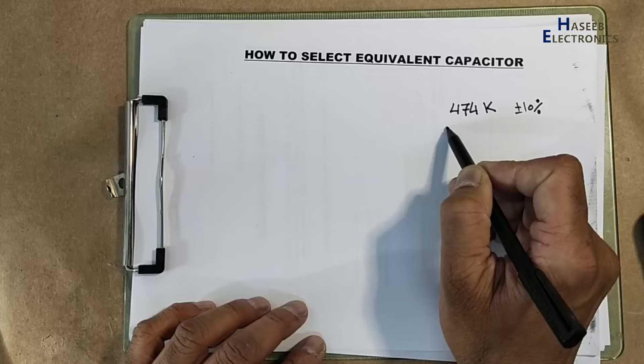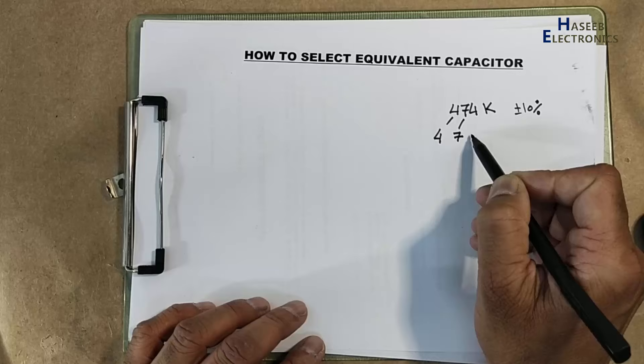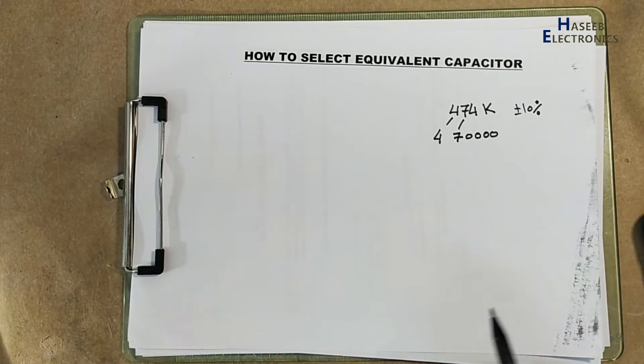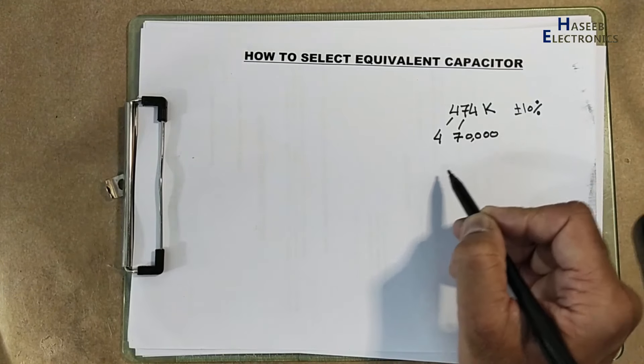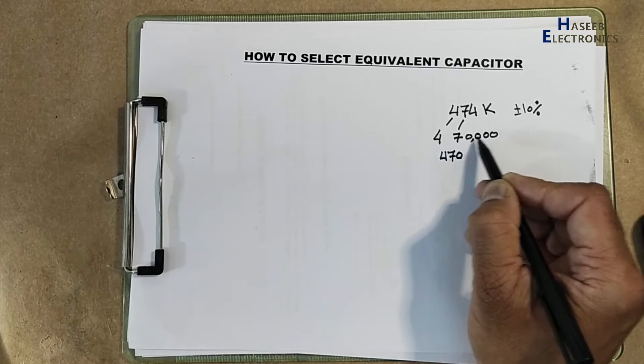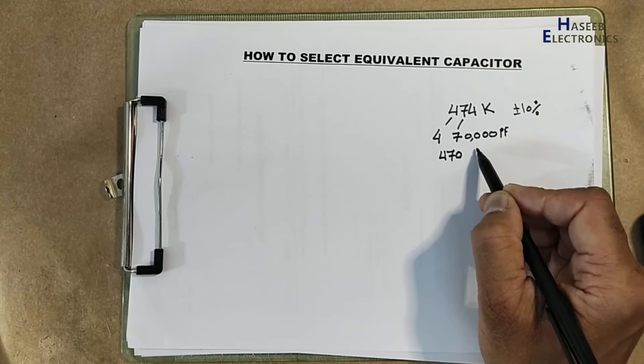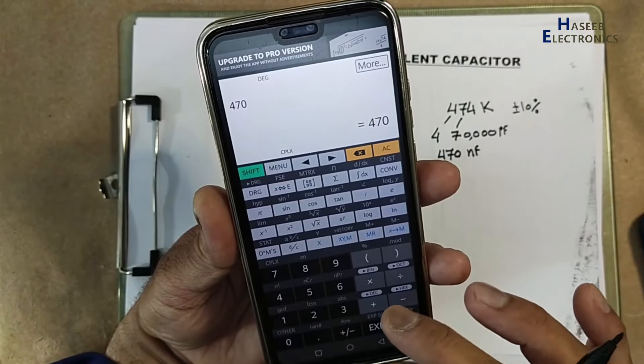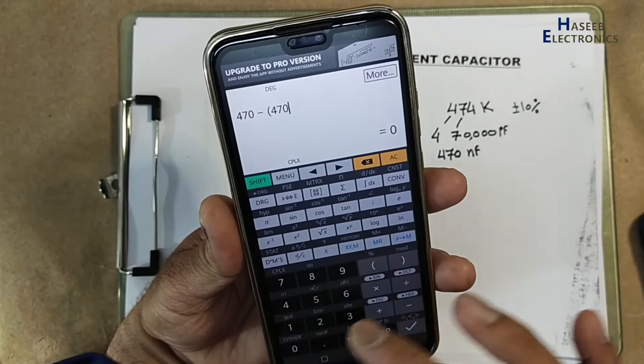Calculate its value. Four, seven, four zeros. One, two, three, four. From right side, one, two, three, here comma. This is PF, picofarad. And if we remove three zeros, then it is nanofarad. 470.